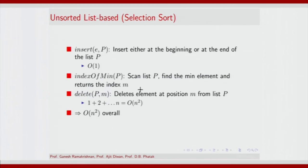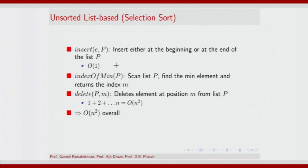Let us start with selection sort and an unsorted list. What is the complexity? Insertion could happen either at the beginning or the end of the list P — in either case the complexity is O(1). Finding the index of the minimum would require you to scan the list, so this is basically O(n) time, where n is the size of the list as you are scanning.